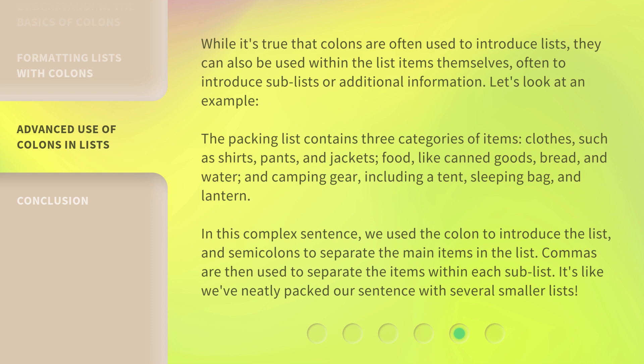The packing list contains three categories of items: clothes, such as shirts, pants, and jackets; food, like canned goods, bread, and water; and camping gear, including a tent, sleeping bag, and lantern.